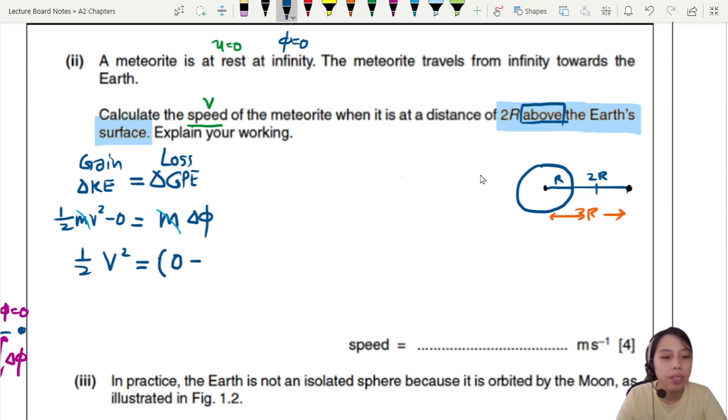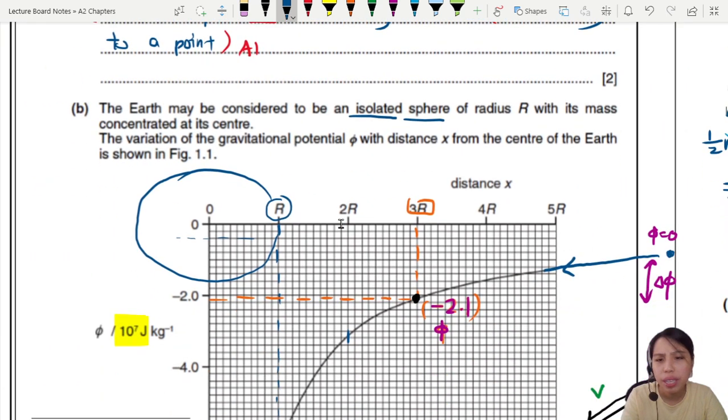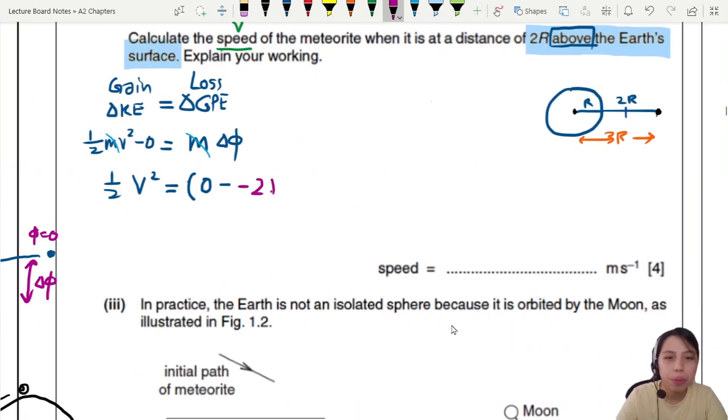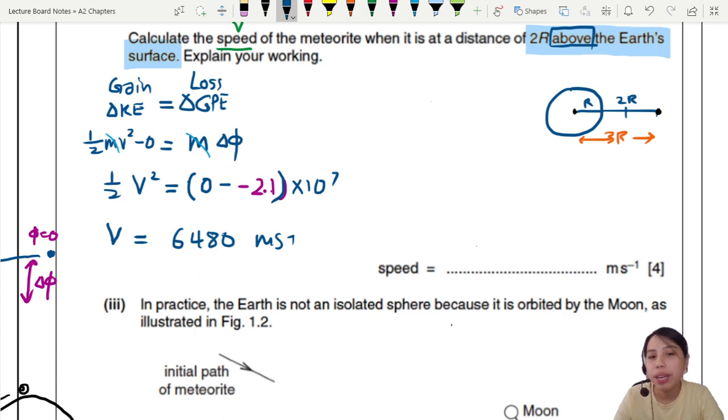So the bigger one is zero minus the smaller one, which is what we read from the graph. What was the thing again? 2.1, right? You move all the way until 2.1. So that will be negative 2.1. Don't forget this whole thing has a unit times 10 to the 7. Okay, so this is our change in potential. Okay, so now we press calculator. We should get a value of V, which is about 6480 meters per second. Final answer I recommend you write in standard form. So this can be 6.5 times 10 to the 3.